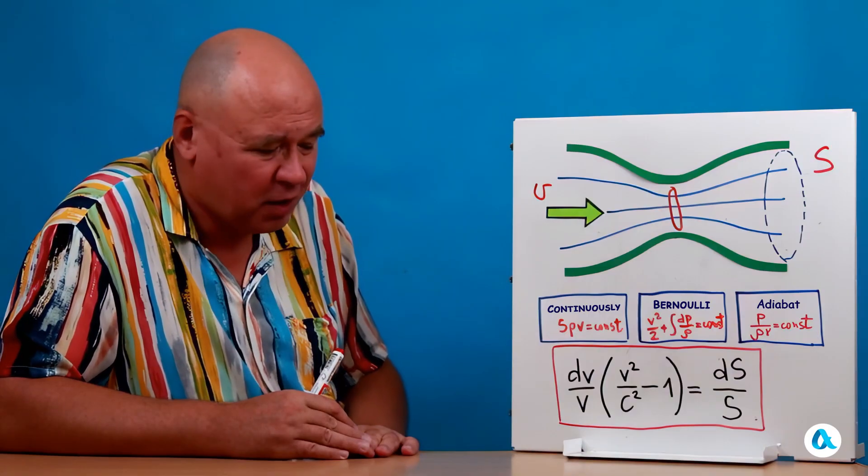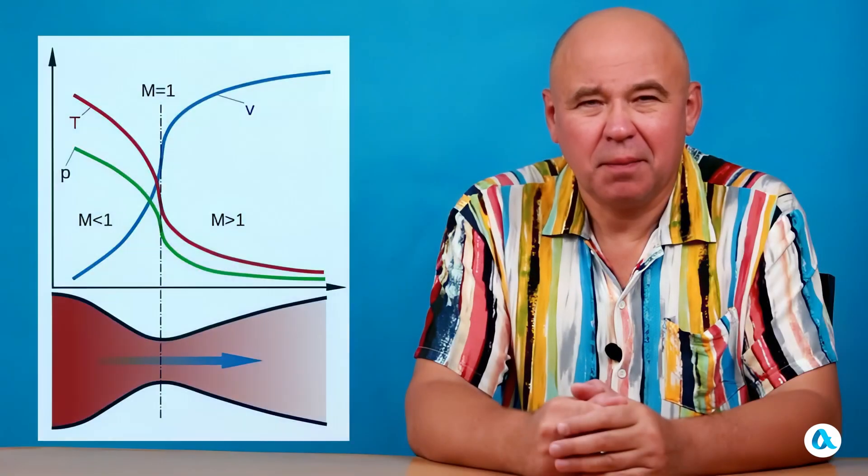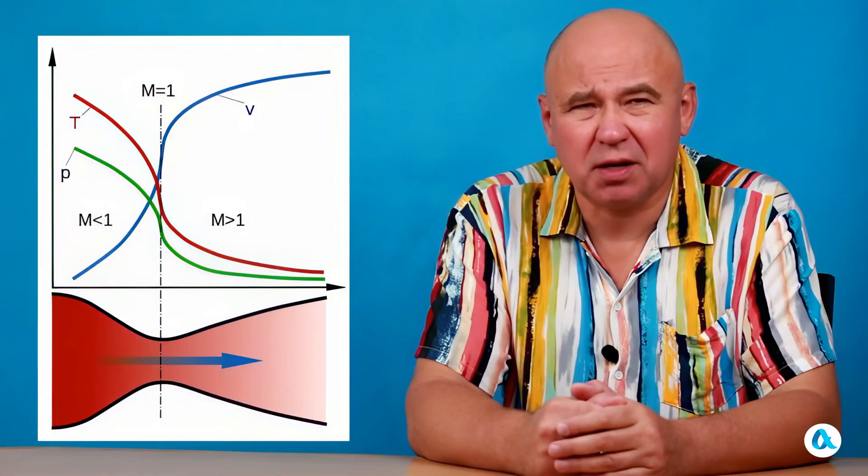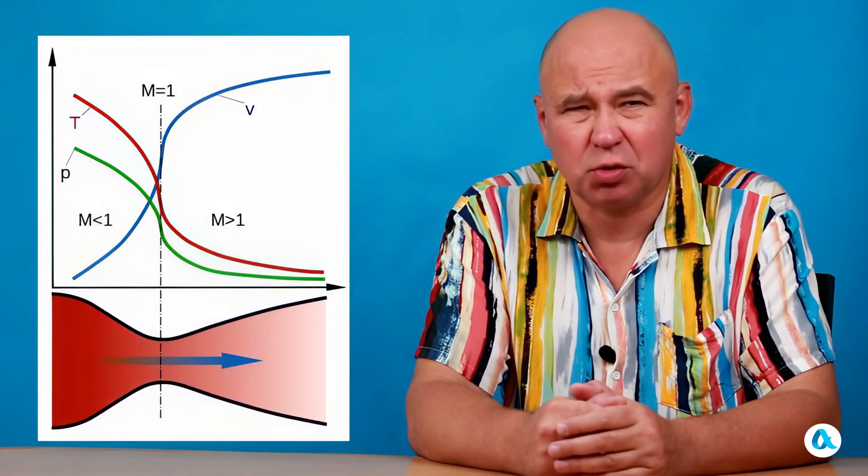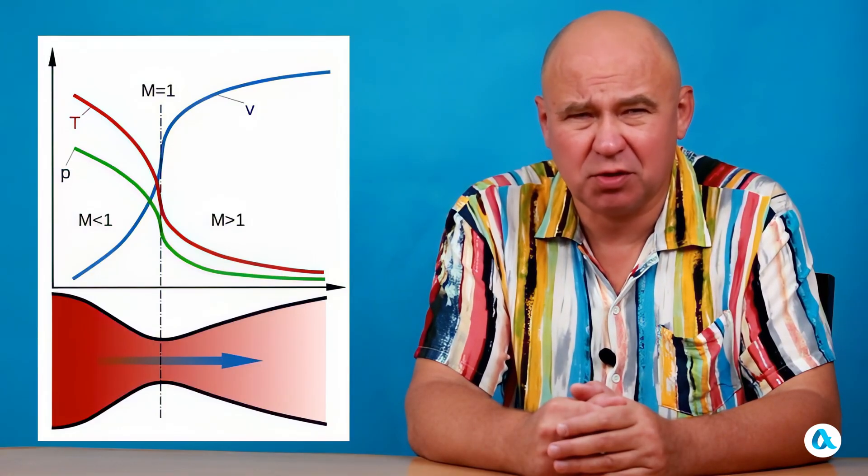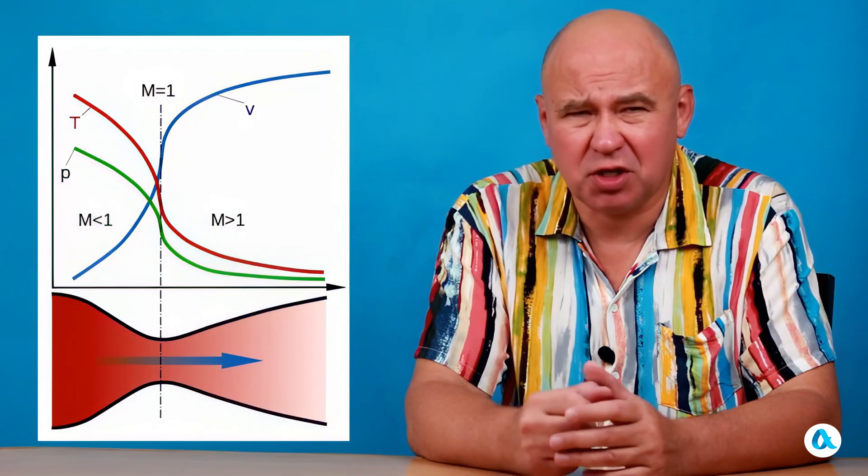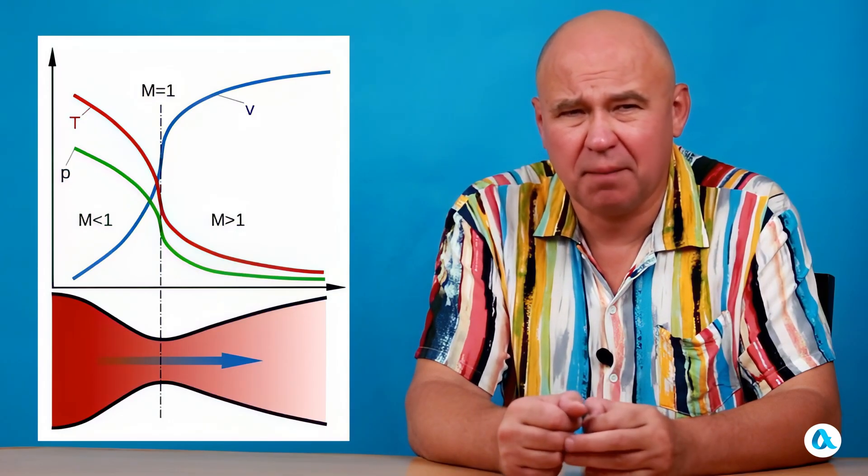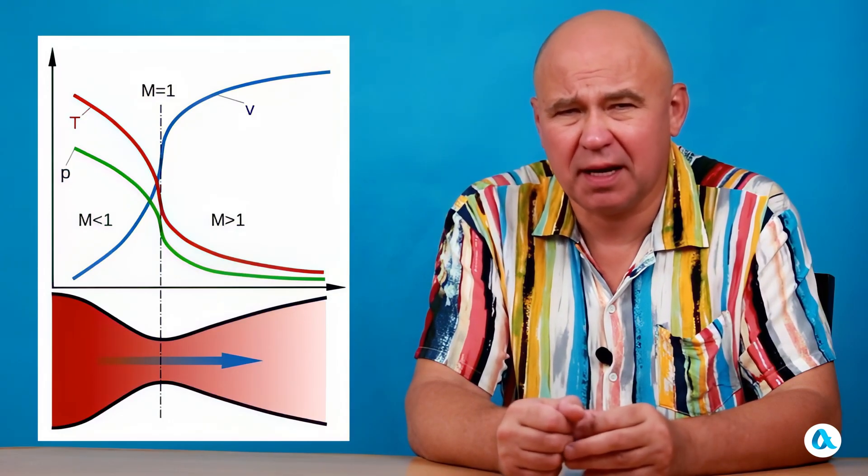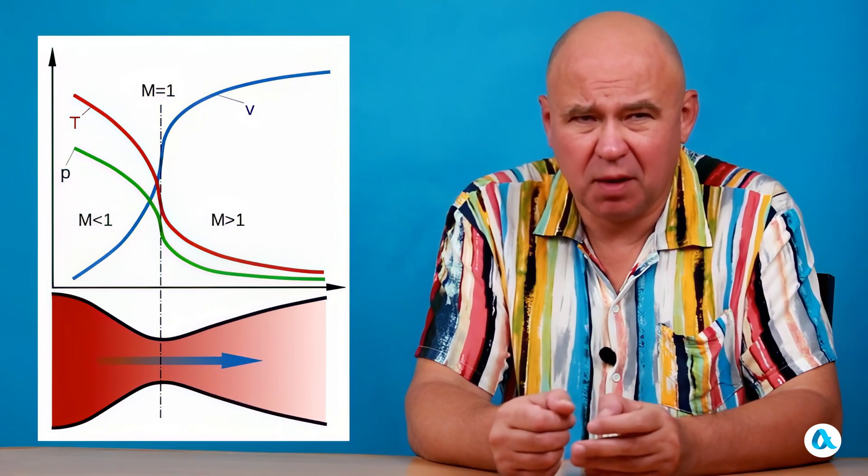Now, we need to draw a general, simple diagram. And in this picture, let's first look at the velocity graph, which is the blue graph. The velocity increases in the subsonic region, then rises sharply near the nozzle throat, and continues to increase in the diverging section.